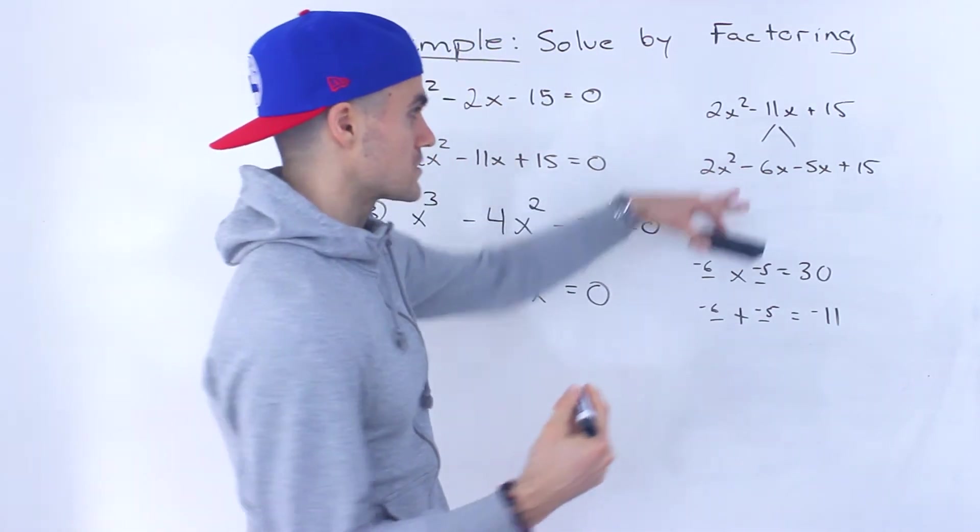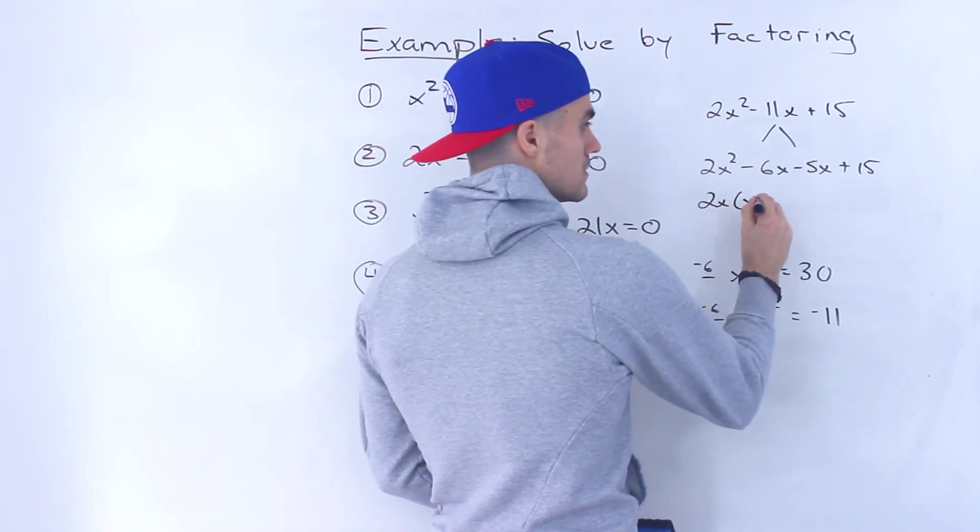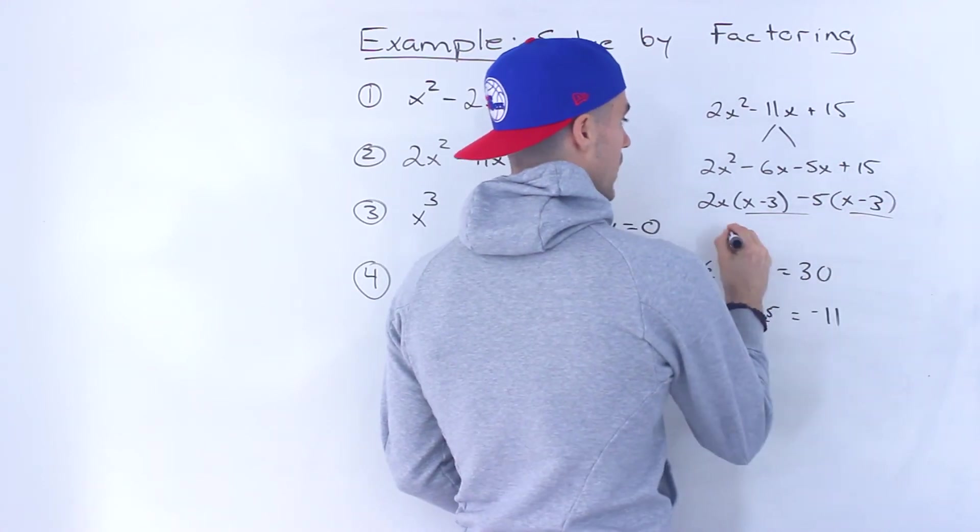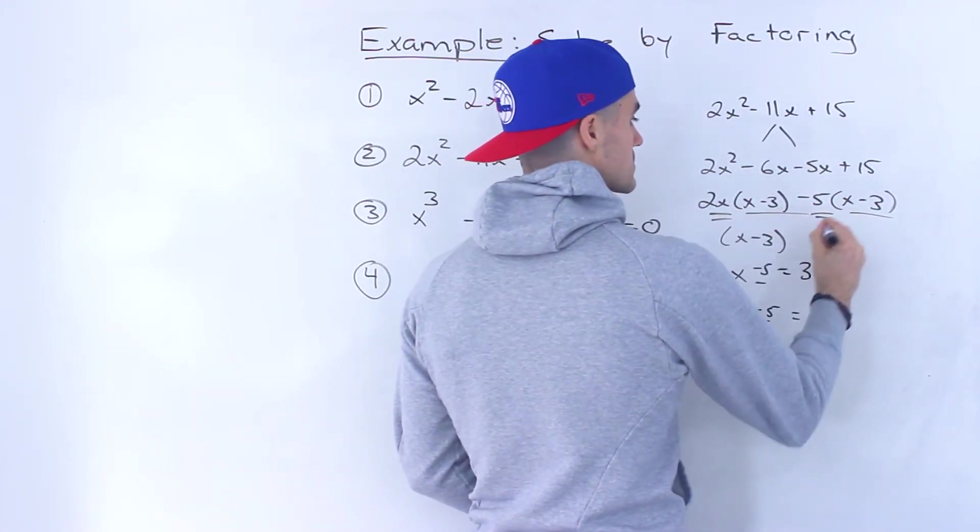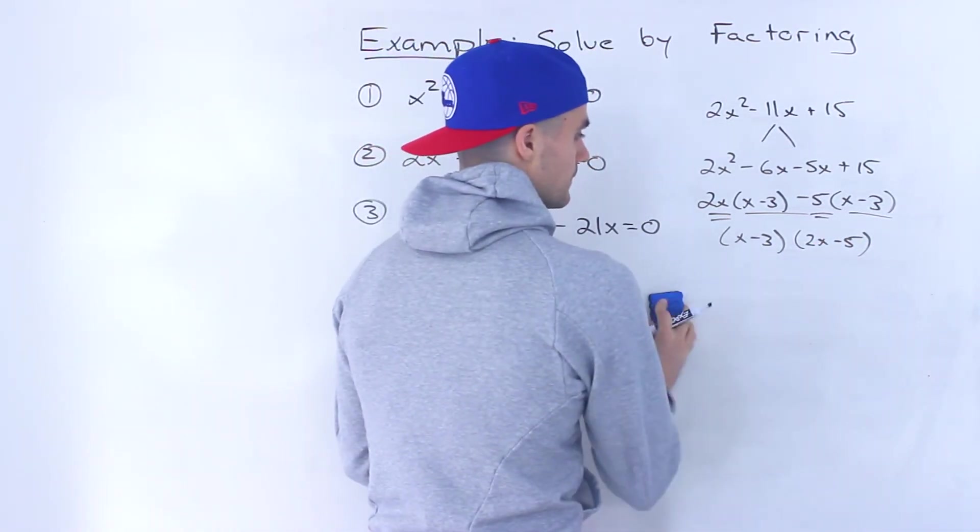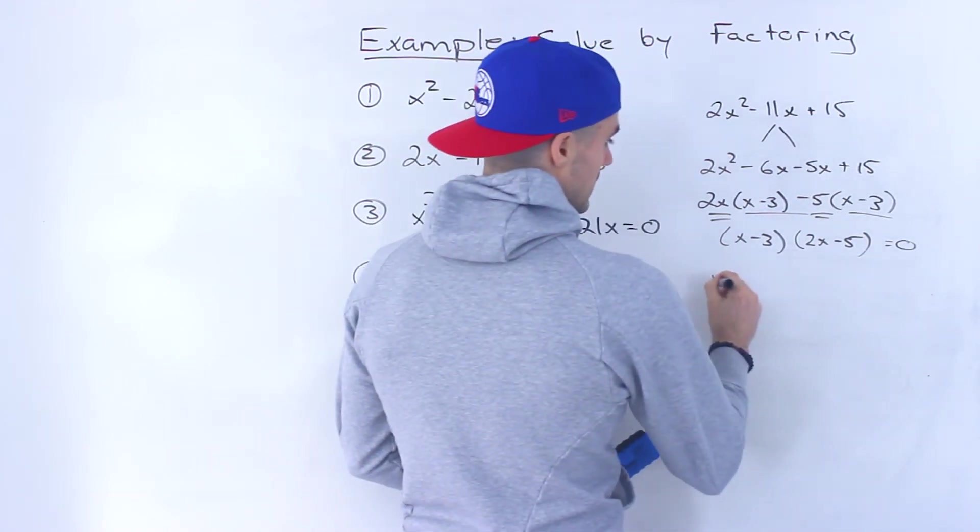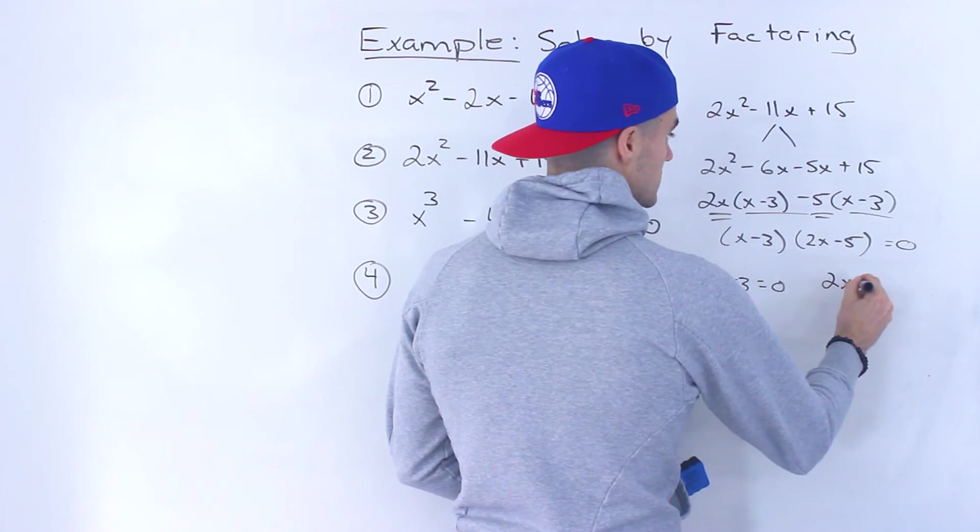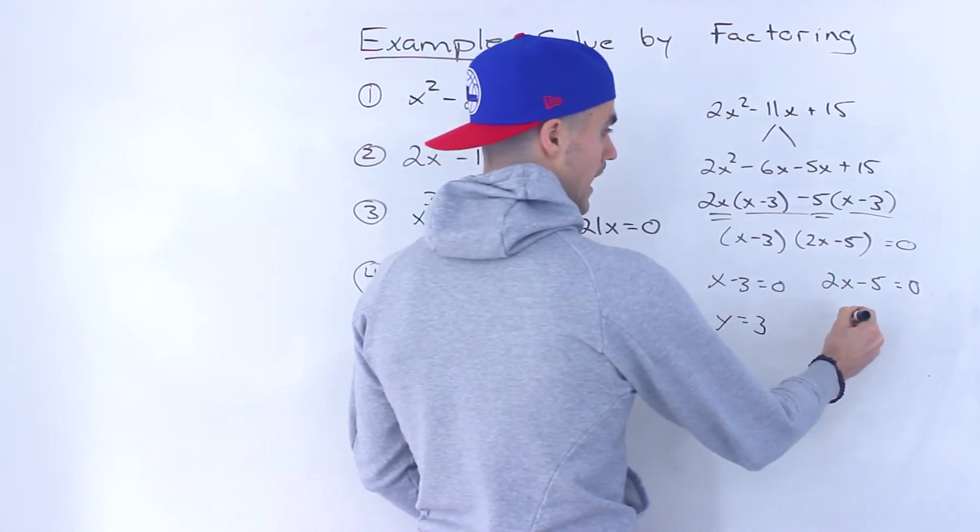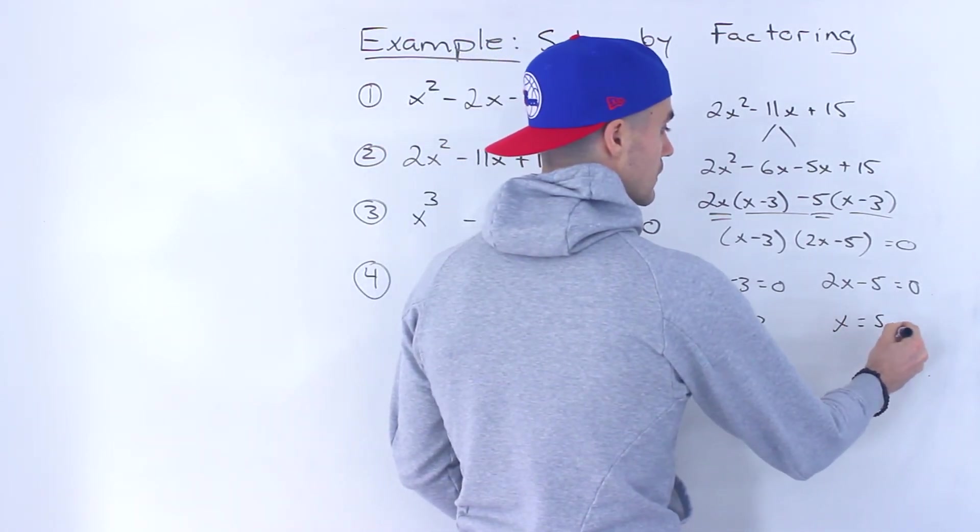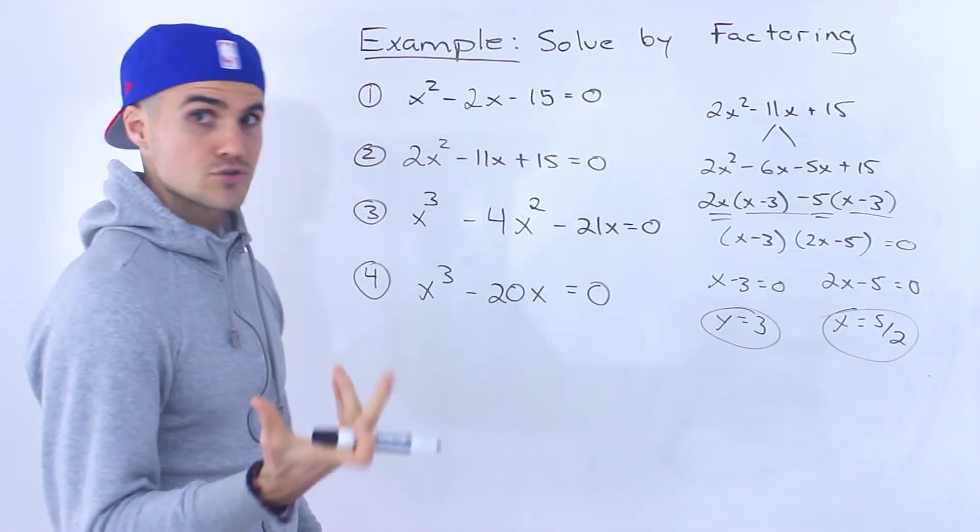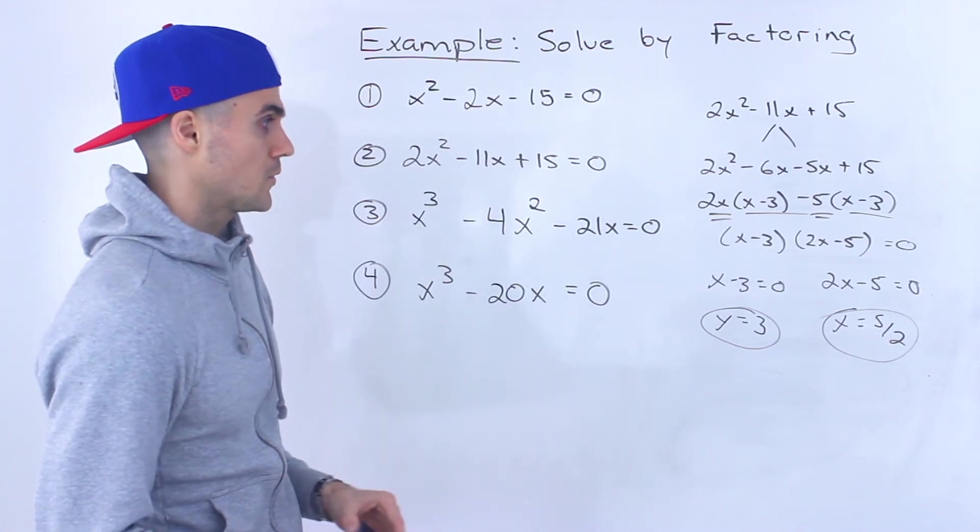Then we factor by grouping. We could take out a 2x from these two, and a -5 from these two. Same bracket, we could take that out and we're left with (2x - 5). When is this going to equal 0? When (x - 3) = 0 or when (2x - 5) = 0. So it's going to happen at x = 3 or x = 5/2. Those are the two solutions to this equation.